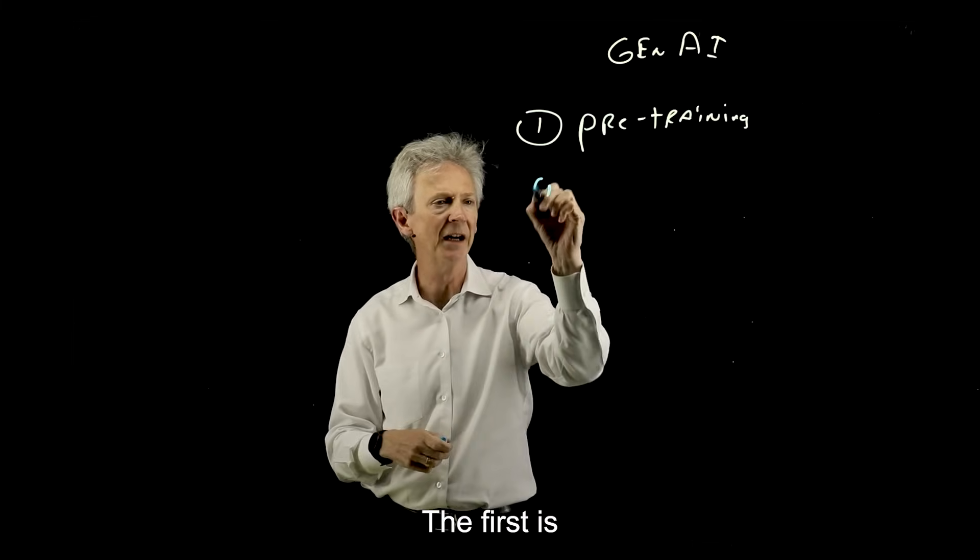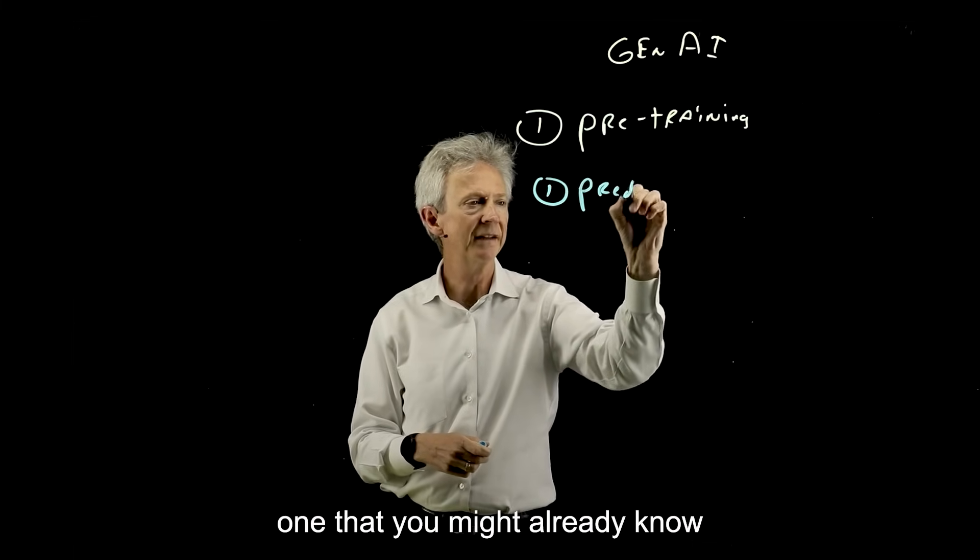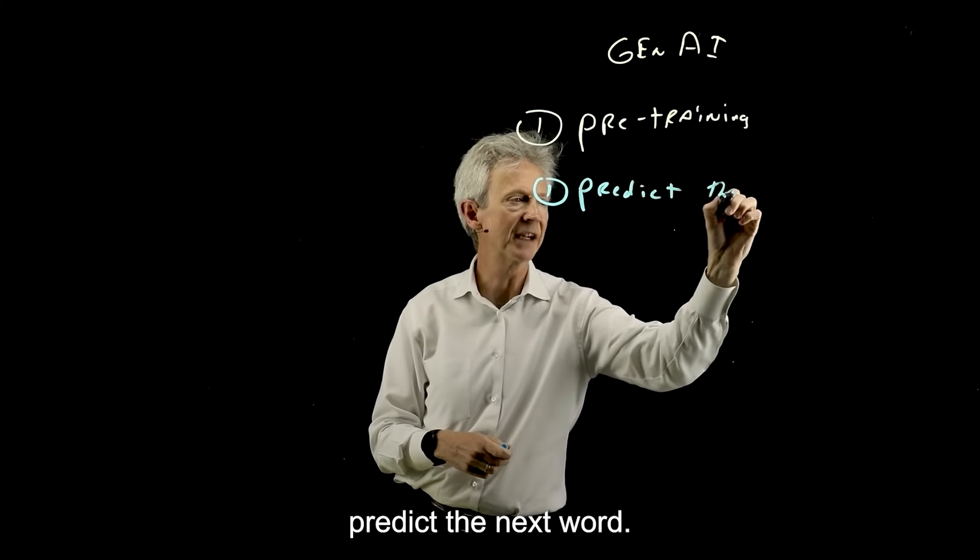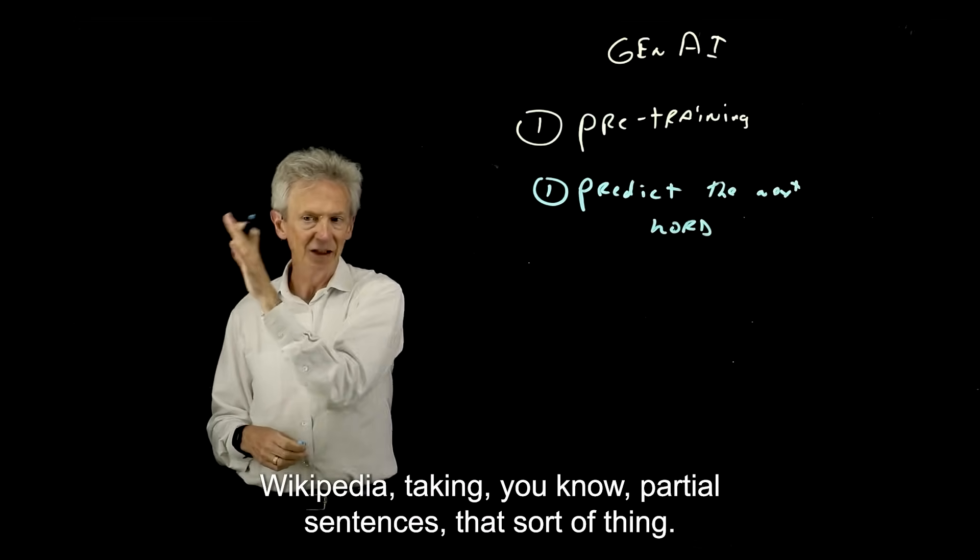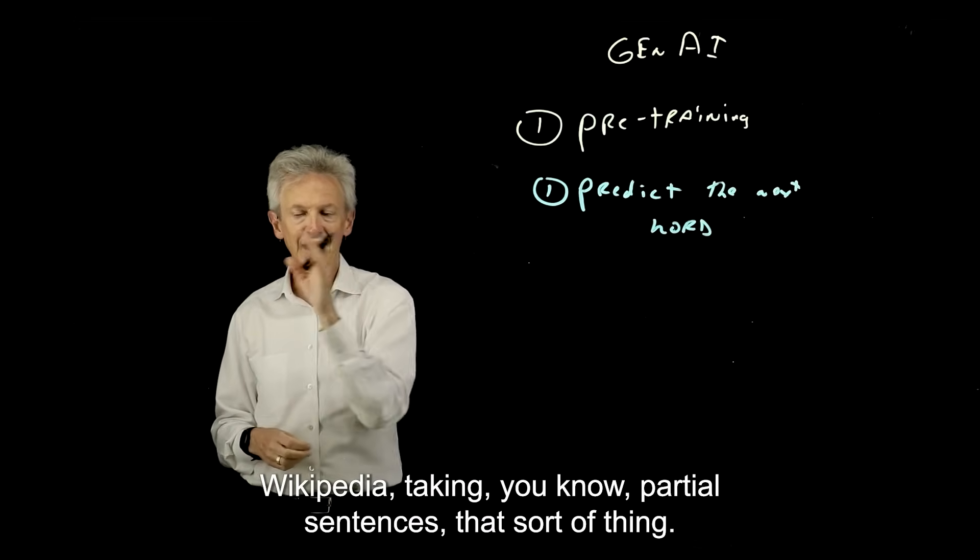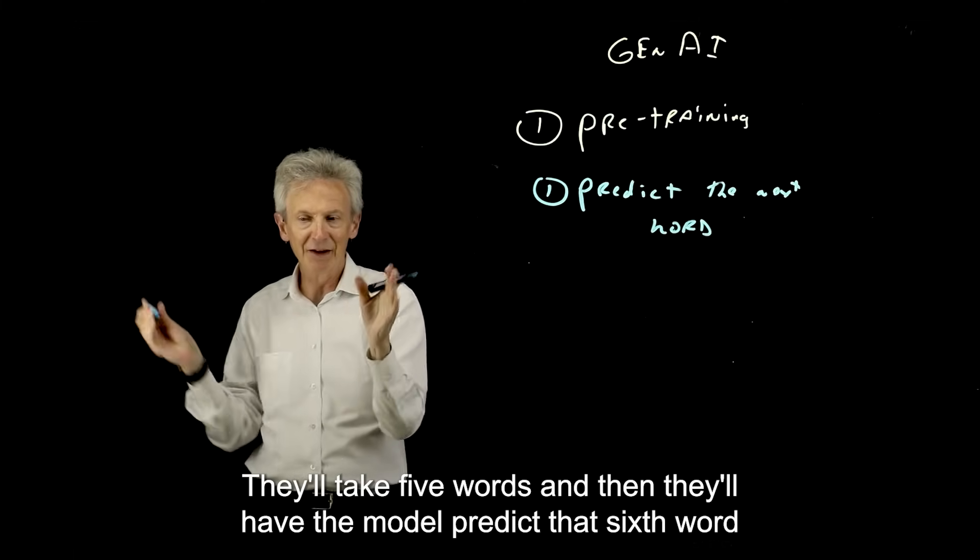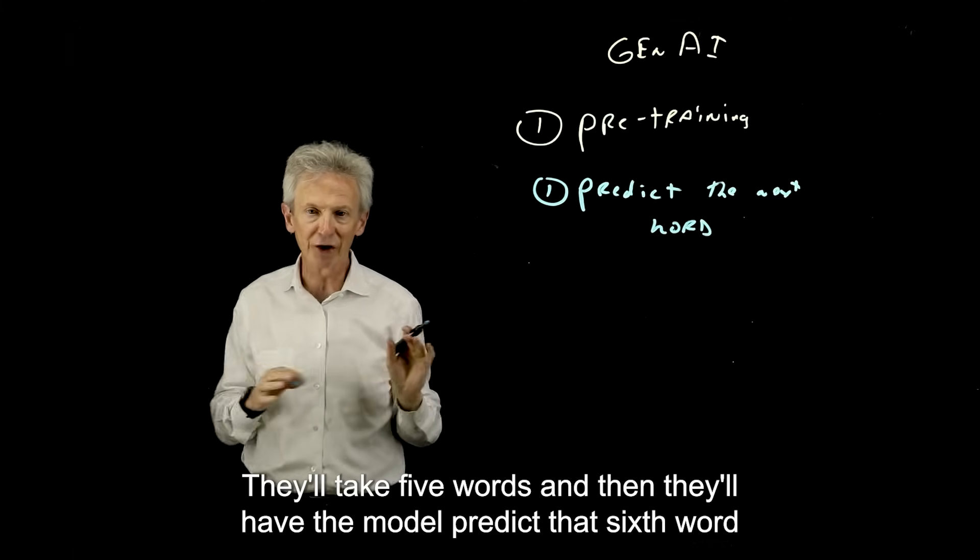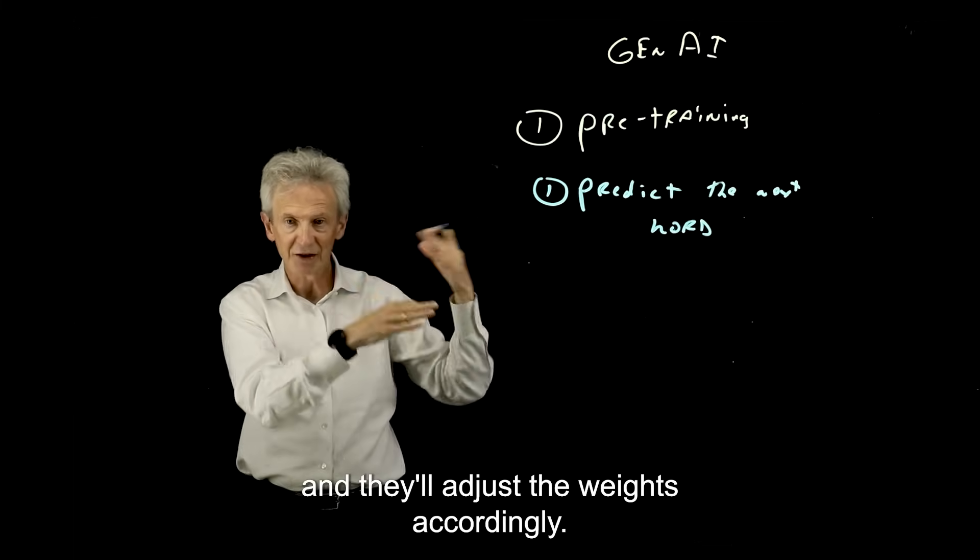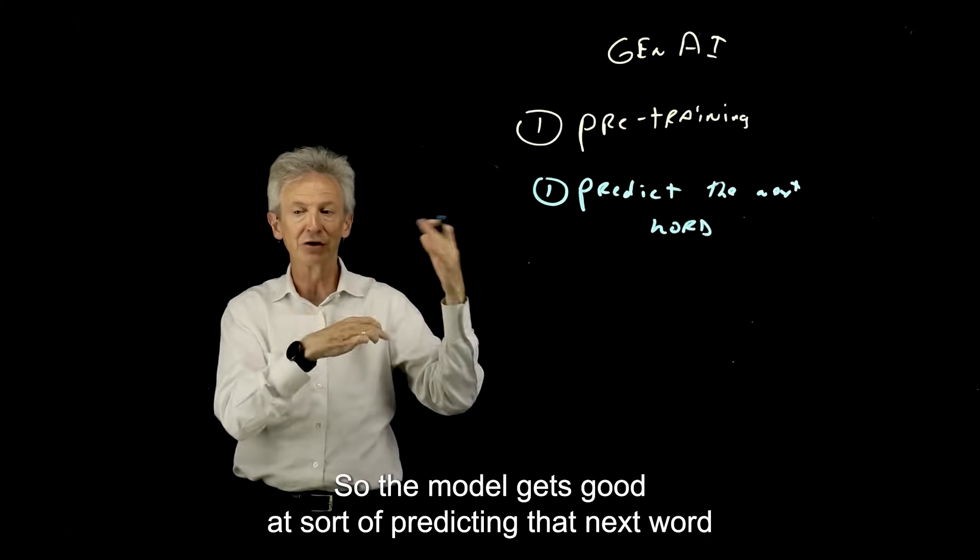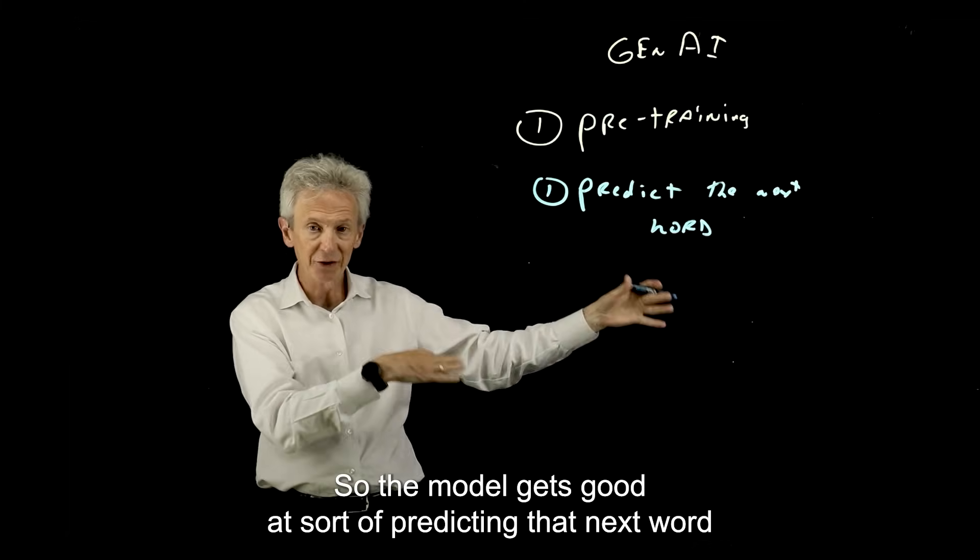So the first is one that you might already know, predict the next word. So let's say they're ripping through Wikipedia, taking partial sentences, that sort of thing. They'll take five words and then they'll have the model predict that sixth word and they'll compare it to the actual sixth word and they'll adjust the weights accordingly. So the model gets good at predicting that next word.